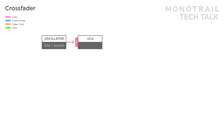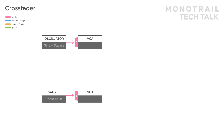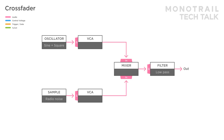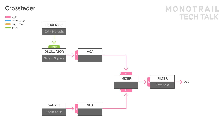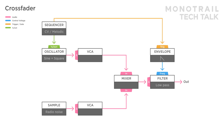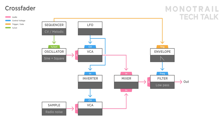Here, an oscillator is sent to a VCA, and the sample player playing a looping radio noise-like sound is sent to another VCA. The output of the VCAs is sent to a mixer, and then a filter. A sequencer is creating a tune for the oscillator and triggering an envelope modulating the filter. Similar to the panner, an LFO is used to modulate one VCA directly and the other VCA through an inverter. Now, the input to the filter crossfades between the oscillator and noise, creating an interesting dynamic sound.